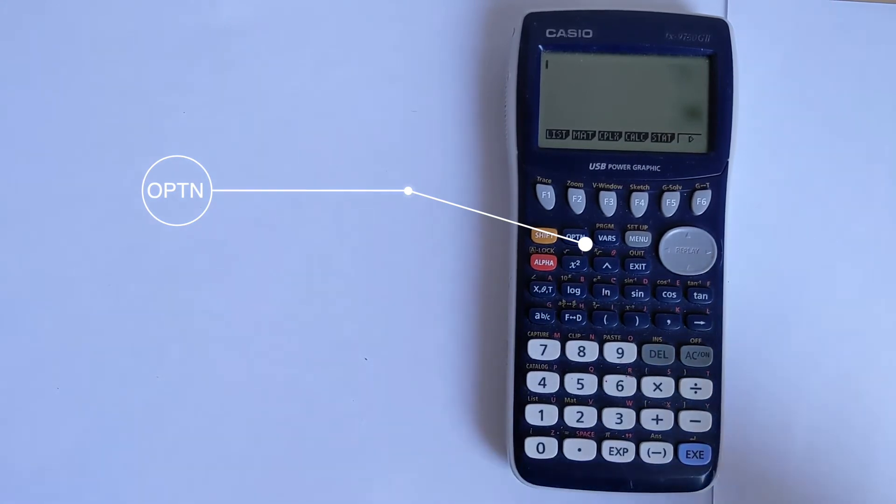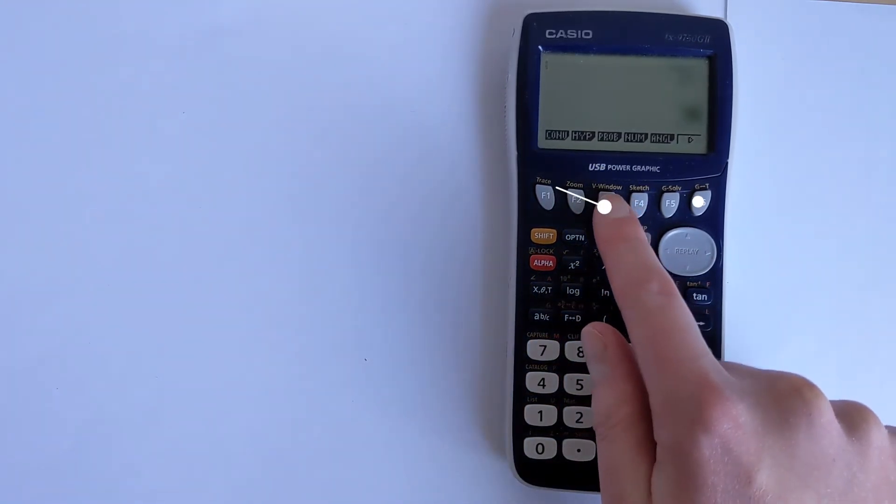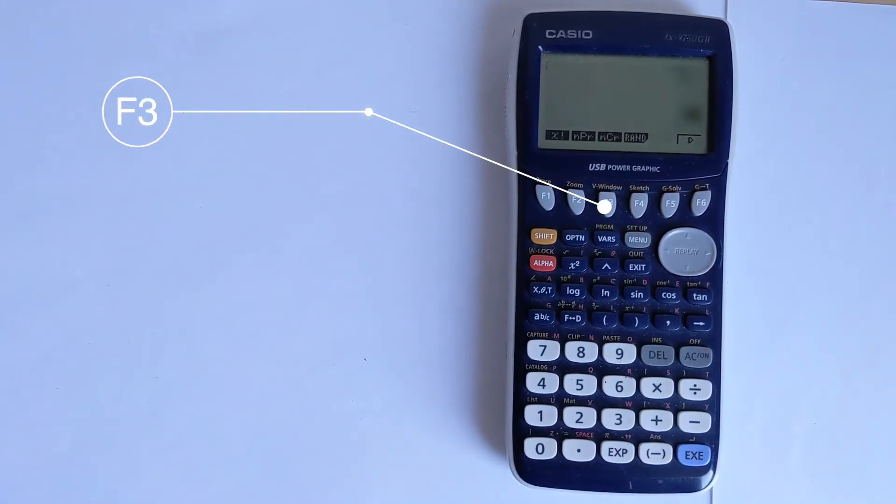None of these are useful, so we need to press F6 to get to the next menu. We want to open prob here, which is short for probability, and that gives us the functions that we need.